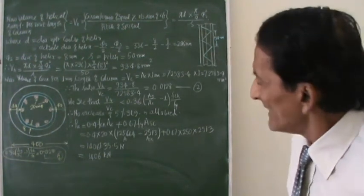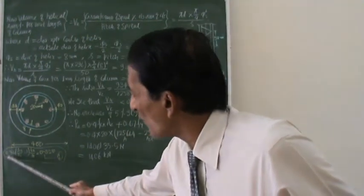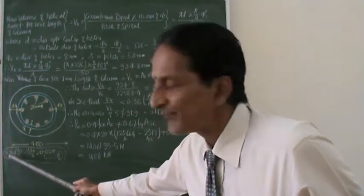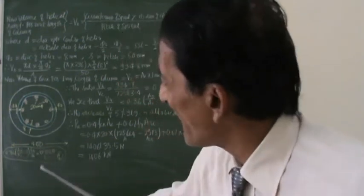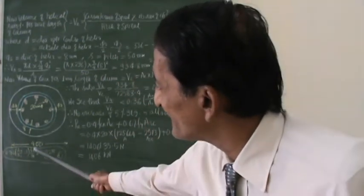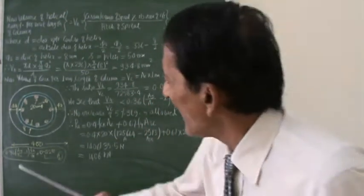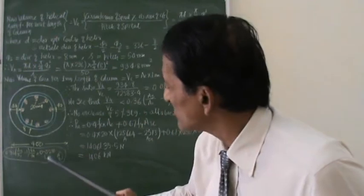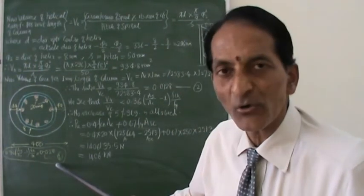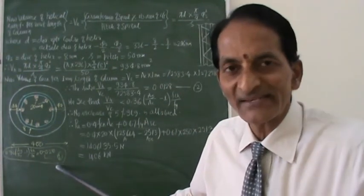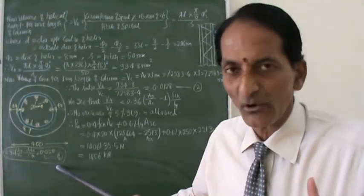So in the last class we calculated one quantity: 0.36 × (Ag/Ac − 1) × (fck / fy). Its value was 0.021. We have called this Relation Number 1.